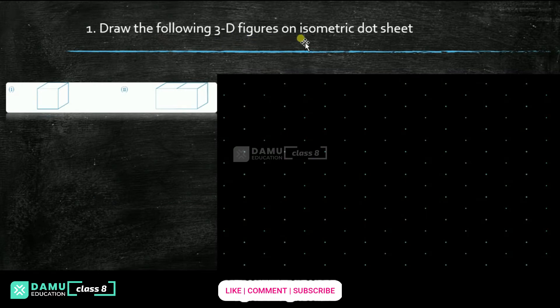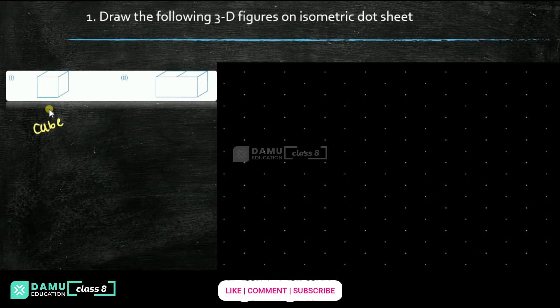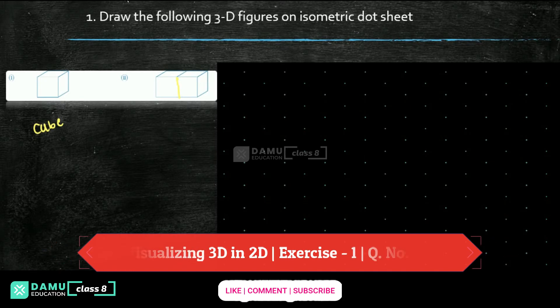Draw the following 3D figures on the isometric dot sheet. This is the isometric dot sheet. Let's take a cube. This is a cube. Let's take this — 2 cubes are joined.